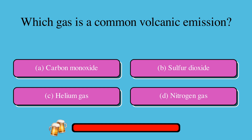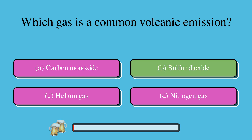Which gas is a common volcanic emission? A. Carbon monoxide, or B. Sulfur dioxide, or C. Helium gas, or D. Nitrogen gas? The correct answer is B. Sulfur dioxide.